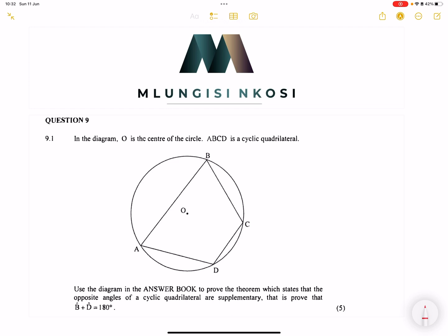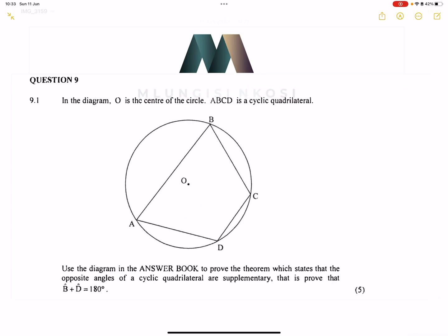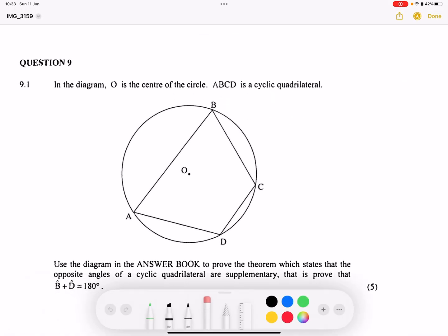Now they say use the diagram in the answer book, which is this very diagram, to prove the theorem which states that opposite angles of a cyclic quadrilateral are supplementary. So they say prove that B plus D is actually equal to 180. That proof is really quite simple, and I'm going to just show you quickly how to go about that.